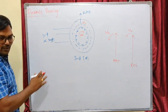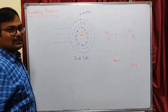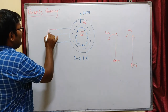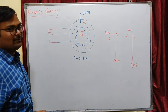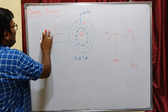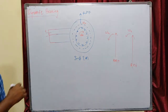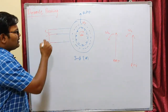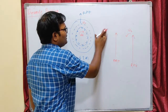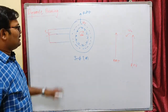In dynamic braking, we disconnect the stator from the AC supply and apply a DC supply to the stator — one positive terminal to one phase and two phases connected to one negative terminal. Initially there was a rotating magnetic field, but now with DC supply, it will be a unidirectional magnetic field. That means there will be no rotation in the magnetic field due to the DC supply.